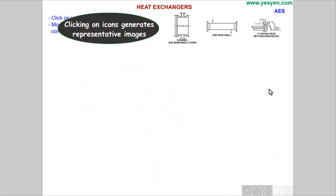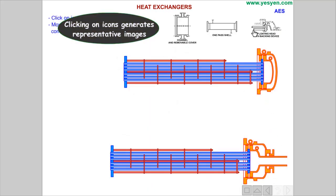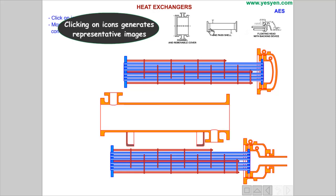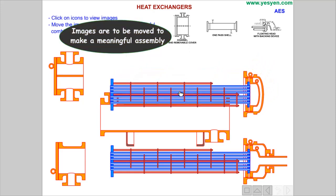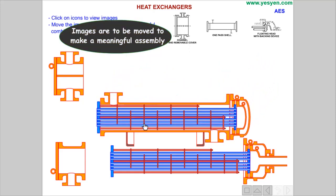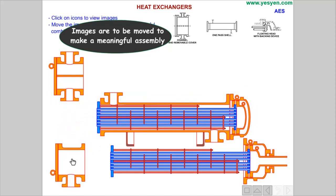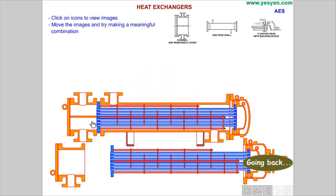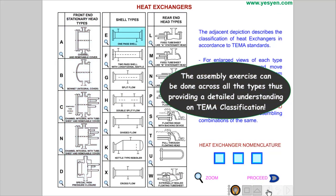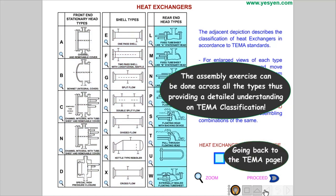Clicking on icons generates representative images. Images are to be moved to make a meaningful assembly, and thus the correct assembly is determined. The assembly exercise can be done across all types, providing a detailed understanding of TEMA classification.